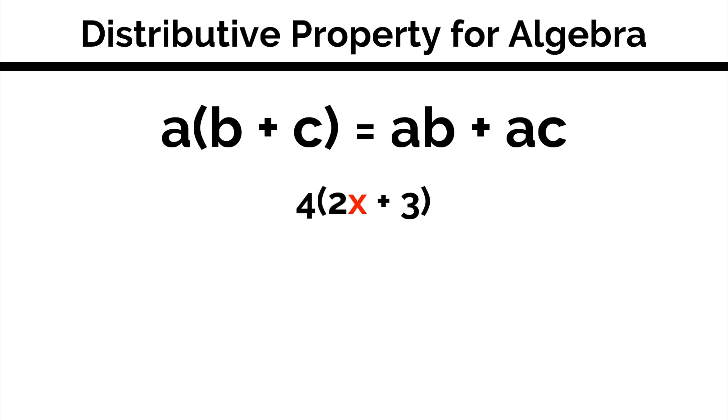But with algebra, there are variables that must remain as they are and can't be combined with numbers. So if we have 4 times the quantity of 2x plus 3, the only other meaningful way to express this is by distributing the 4 across the sum. That will give us 4 times 2x plus 4 times 3, which will simplify to 8x plus 12.